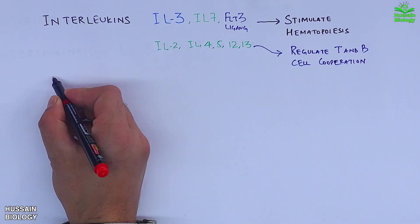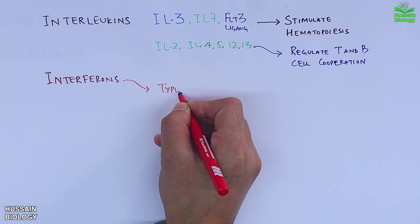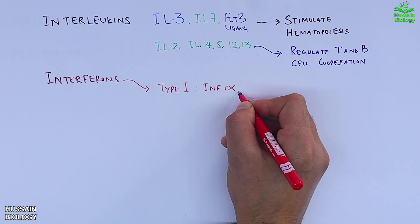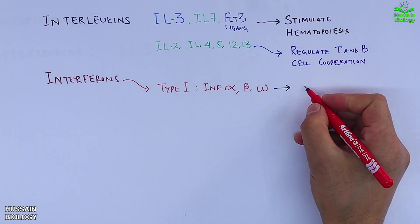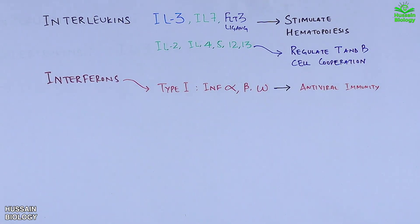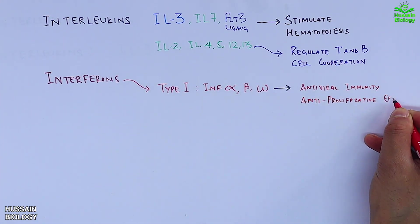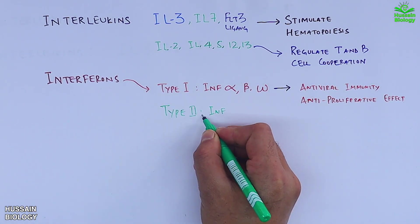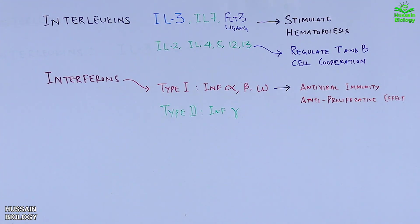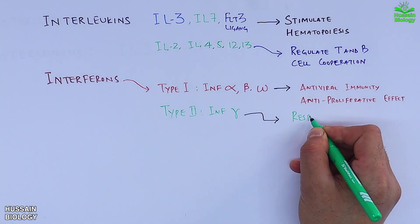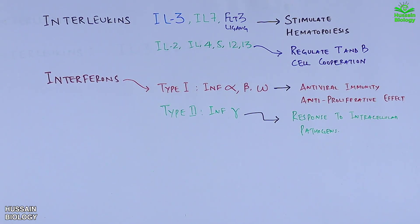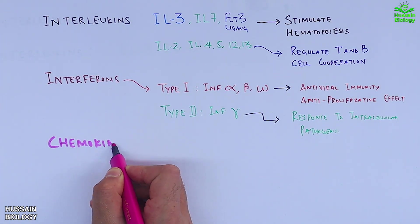The second class is the interferons. Type 1 interferons — alpha, beta, and omega — show antiviral activity and anti-proliferative effects. Furthermore, we have the type 2 interferon, interferon-gamma, which responds to intracellular pathogens.